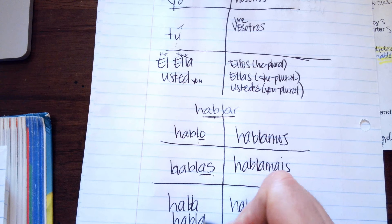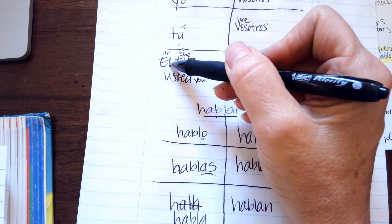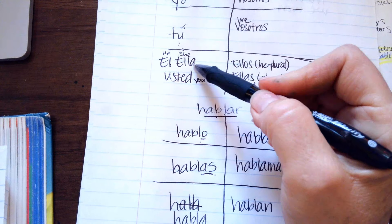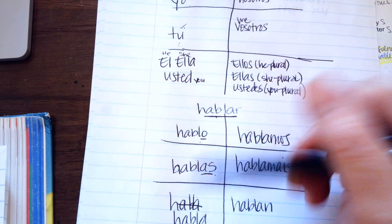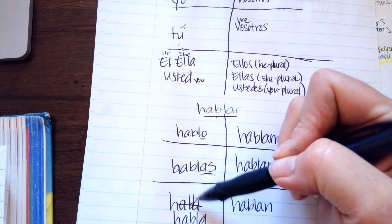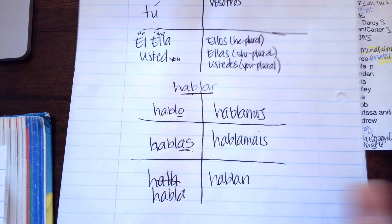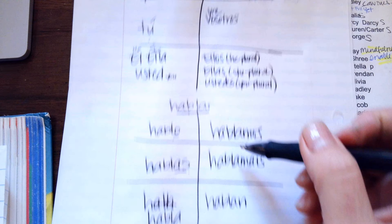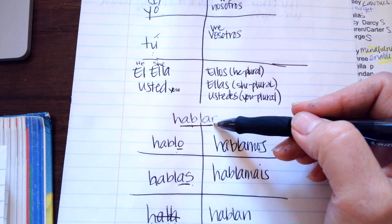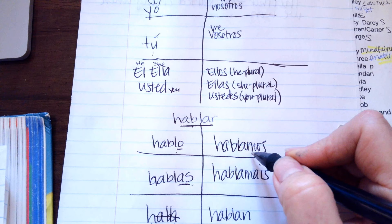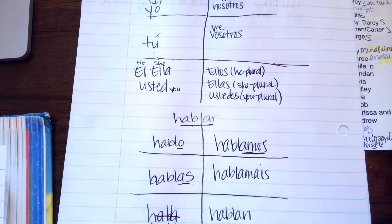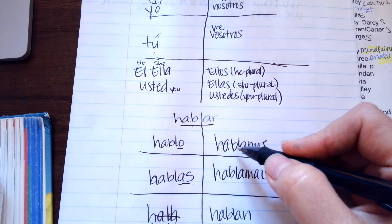And then if you say habla, that means either he speaks, ella, she speaks, or usted, you speak. Instead of saying we speak and saying nosotros hablar, you would just say hablamos. And this tells someone that you're basically saying we speak.